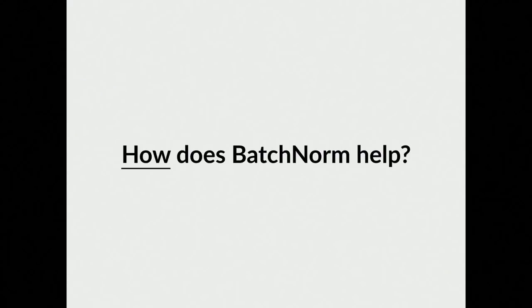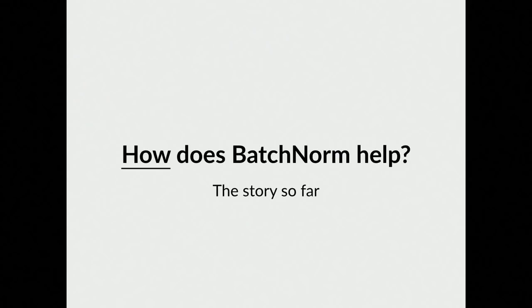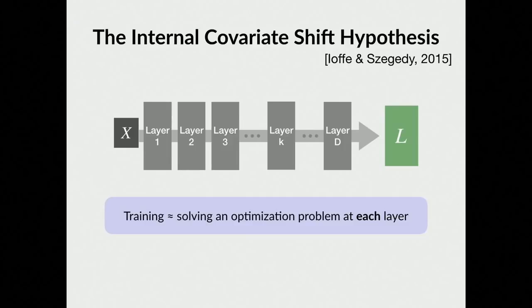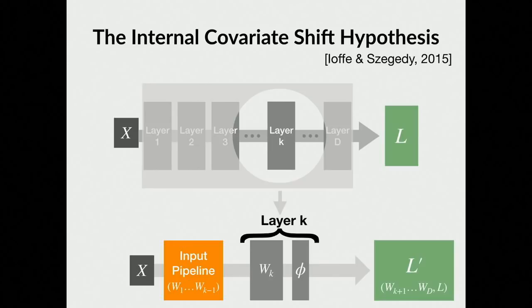Now that we've covered why we might want to use batch norm, we really get to the crux of what we want to do, which is understand how it's giving us these benefits at optimization time. There's been a huge flood of work on batch norm in the last one or two years, and when I say 'the story so far,' I really mean what's the classical picture of why batch norm works — how was it introduced?